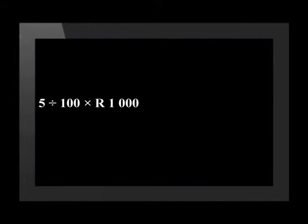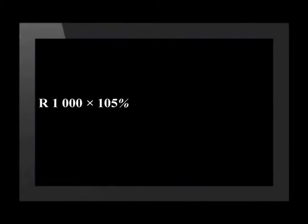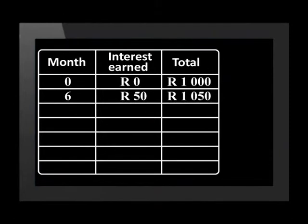The calculation is also quite easy. The interest on the money is five percent of one thousand rand, which equals five divided by one hundred multiplied by one thousand rand, which equals fifty rand. Every six months fifty rand of interest will be added to the money in the account. Do you remember another way to work out the total if the investment increases by five percent? For an increase of five percent we multiply the total by one hundred and five percent. One thousand rand times one hundred and five percent equals one thousand and fifty rand. The reason this is called simple interest is that the amount of interest earned is only calculated on the original amount.